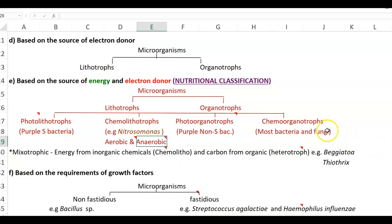Photo-organotrophs include Rhodospirillum, which are purple non-sulfur bacteria. Finally, chemo-organotrophs represent the largest group — most bacteria and fungi fall under this category. These are the four important nutritional groups studied in the previous lecture.